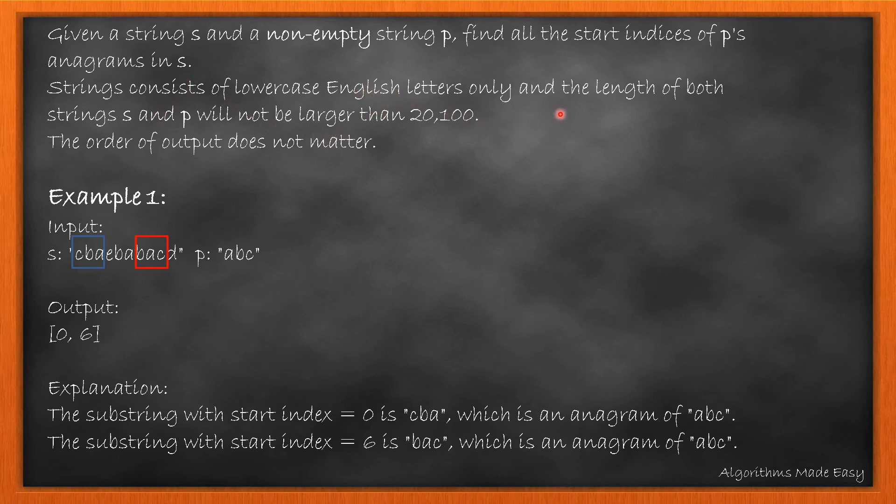For example 1, we can see that ABC and BAC are two anagrams of P. So the program returns the starting indexes of these.